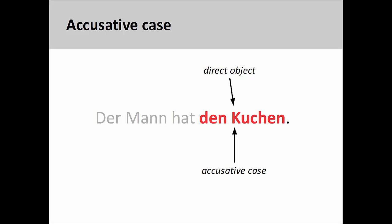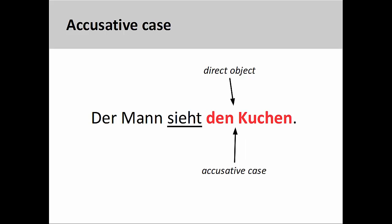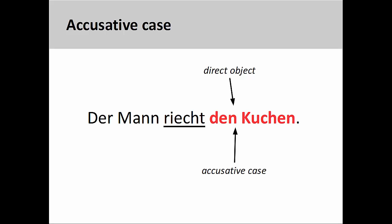It is easy to see how the nominative and accusative cases work together when the verb expresses a very physical action — we can perhaps visualize the man carrying or holding the cake. But the same relationship between nominative and accusative exists when the verb expresses no physical contact between the subject and its direct object. Here, the man sees — sieht — the cake; the cake receives the action of being seen by the man. Or perhaps the man can even smell — riecht — the cake. The cake still receives an action, this time that of being smelled by the man.